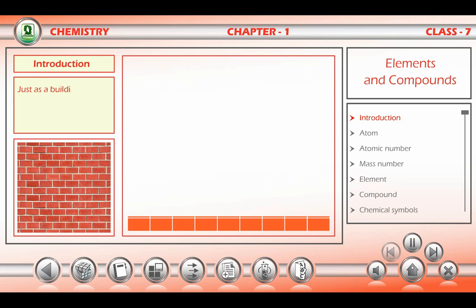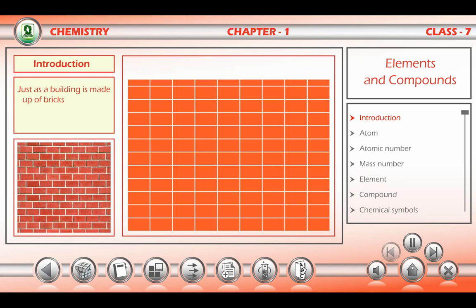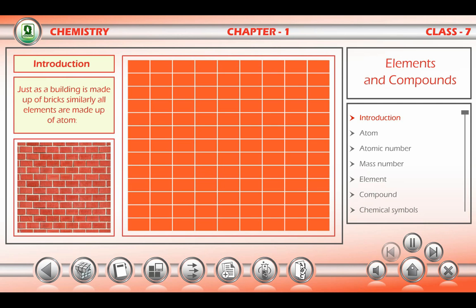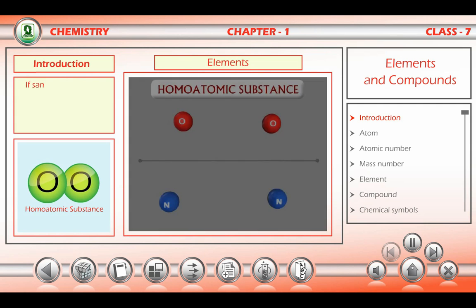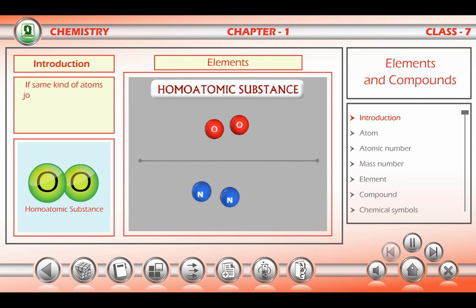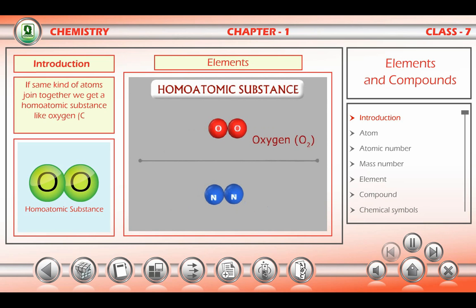Just as a building is made up of bricks, similarly all elements are made up of atoms. If same kind of atoms join together, we get a homoatomic substance like oxygen, nitrogen, etc.